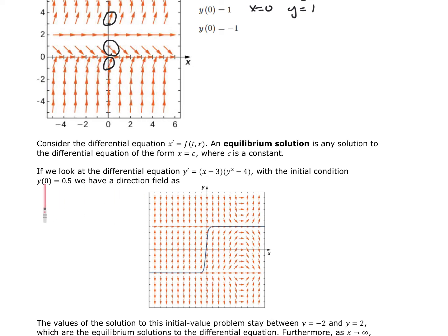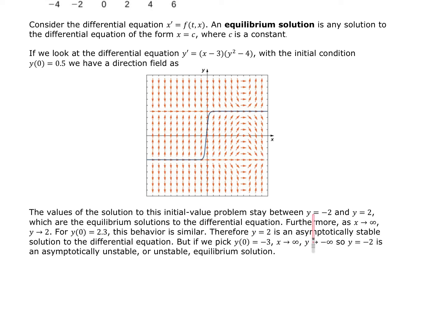Here's the directional field. At x equals 0 and y equals 0.5, I'm right here on the field. The values for this solution stay between negative 2 and 2. If you're below negative 2, the arrows point downward and you continue going down. If you're in the region between negative 2 and positive 2, solutions head upward toward y equals 2.